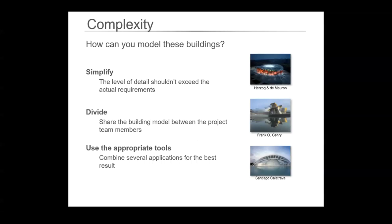Using the appropriate tools is also important. ARCHICAD is not the only tool — there are other tools we can use to combine models and check models. Solibri is really good at combining IFCs. SketchUp is useful for massing and simple concept design work. Grasshopper for Rhino is good for doing algorithmic design, exploring design options and different things. There are lots of tools that have their place and it's good to know what they do.